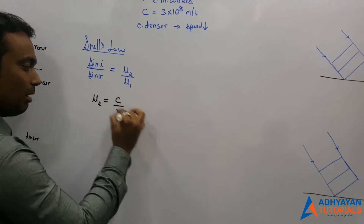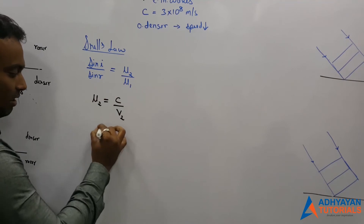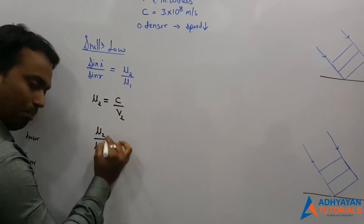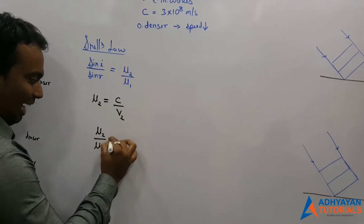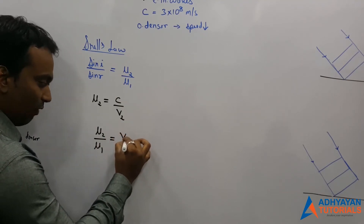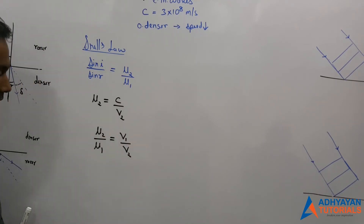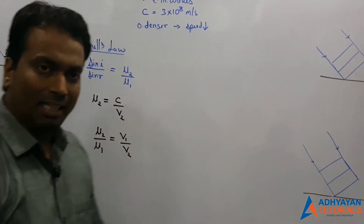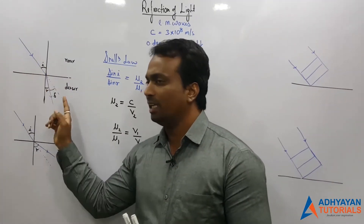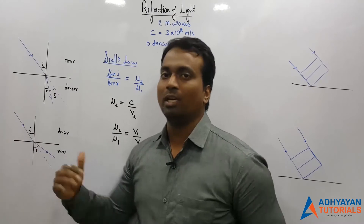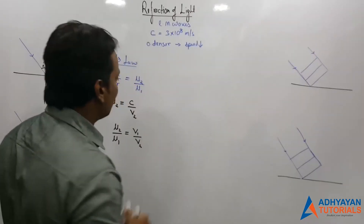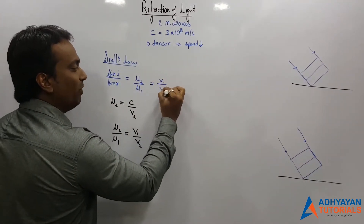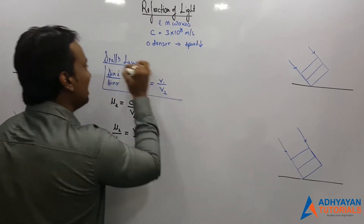Based on this, I can express μ₂/μ₁ — the refractive index of the second medium with respect to the first — as equal to v₁/v₂, that is the speed of light in the first medium divided by the speed in the second medium. Combining this with Snell's law, sin i / sin r = μ₂/μ₁ = v₁/v₂. This single combined relation is sufficient to explain mathematically why light bends as it does at a boundary.